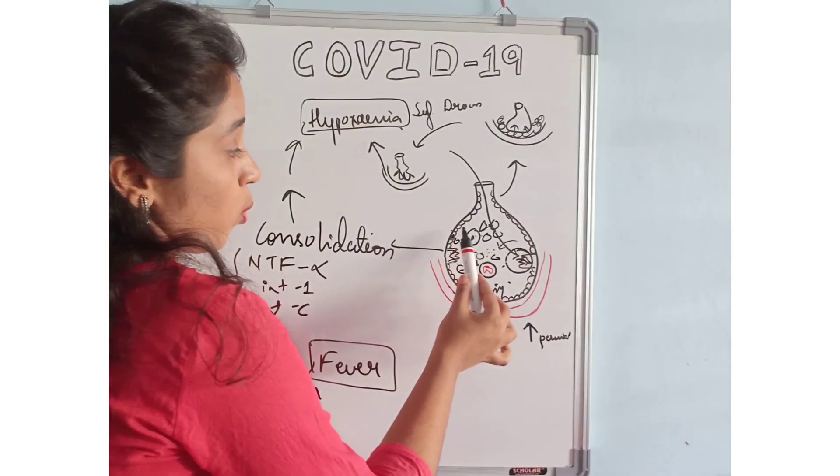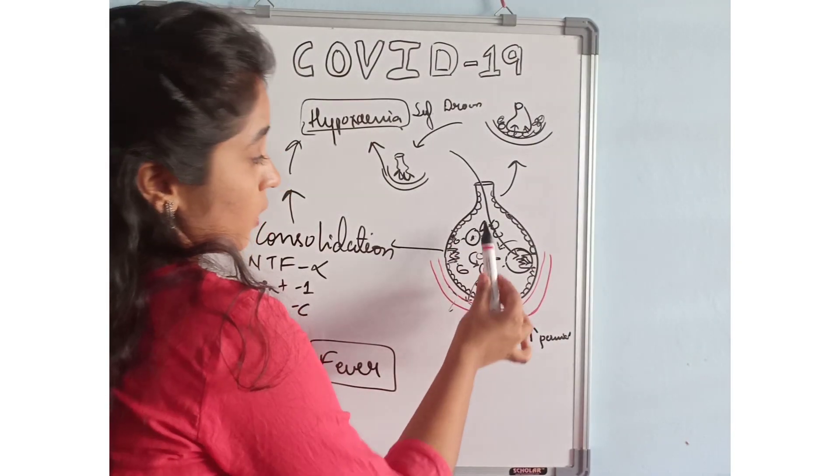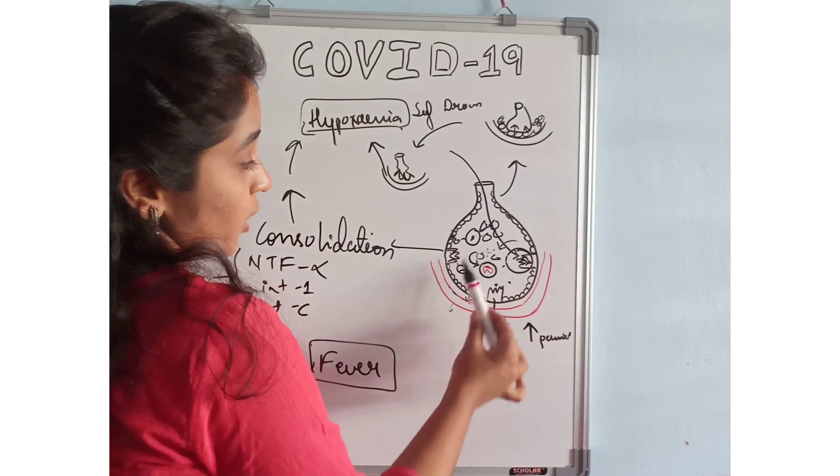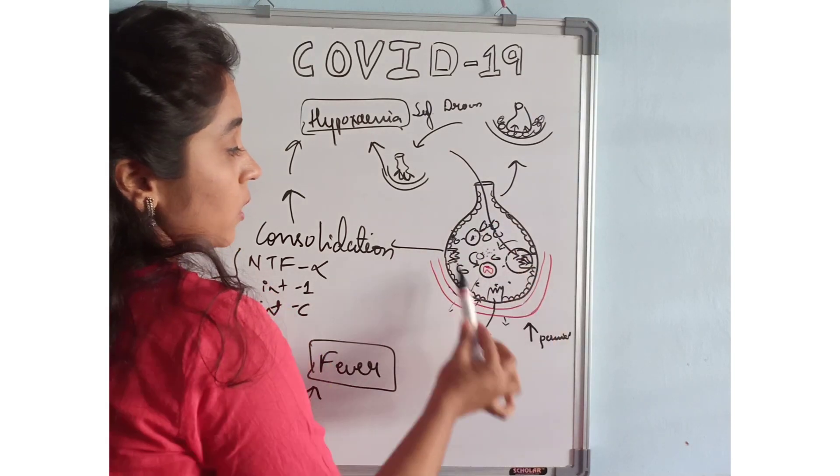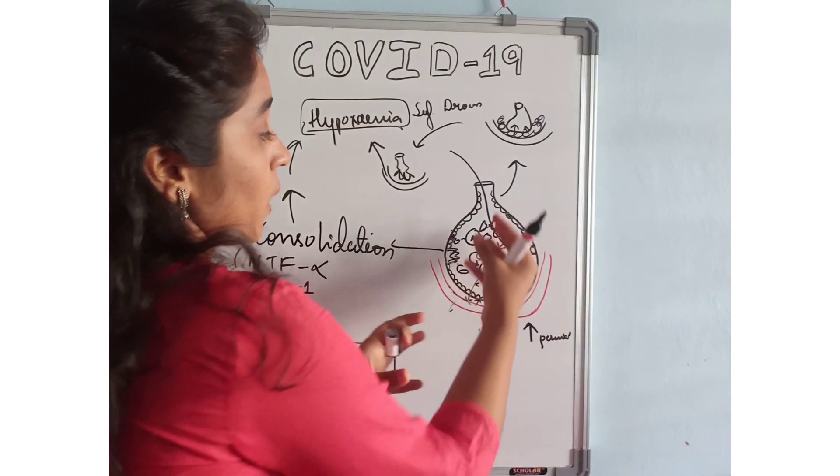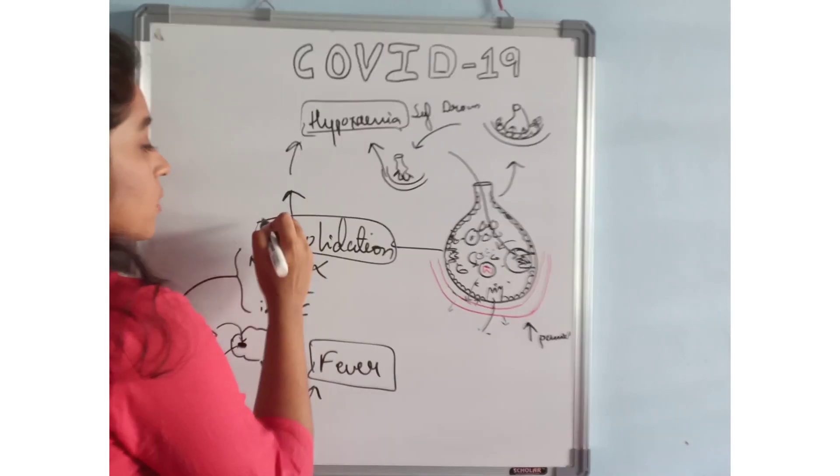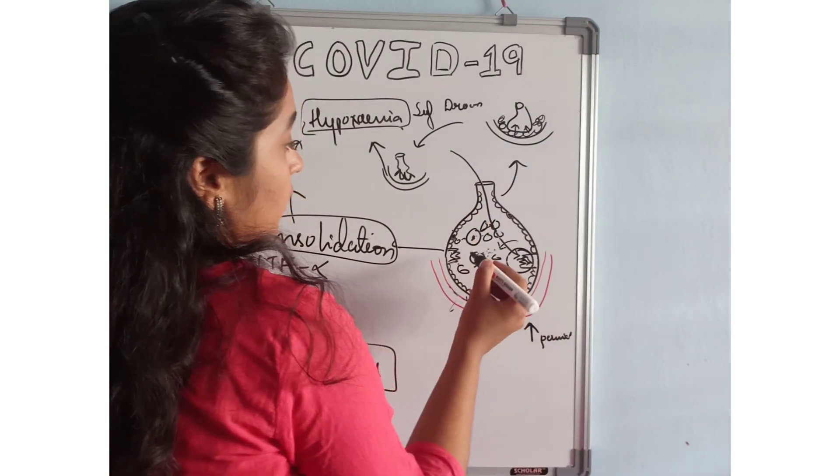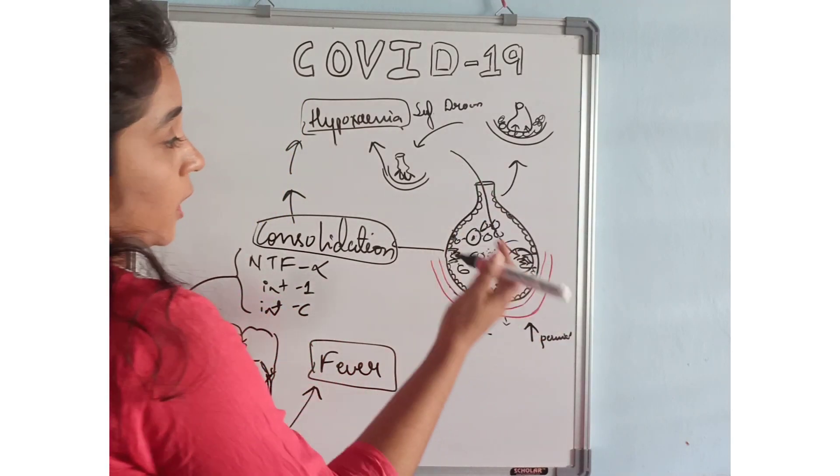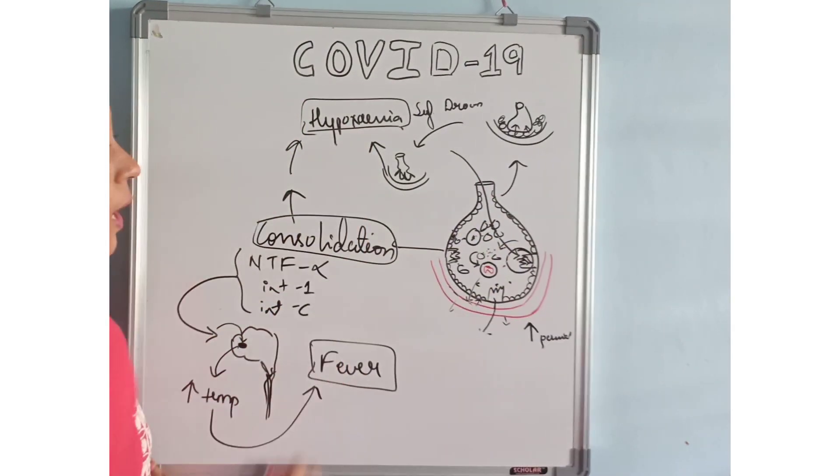The pneumocyte type 1, pneumocyte type 2, the neutrophils, the macrophages—these all may overcrowd in the alveoli and lead to consolidation. That will in turn hamper the gas exchange process and lead to hypoxemia.